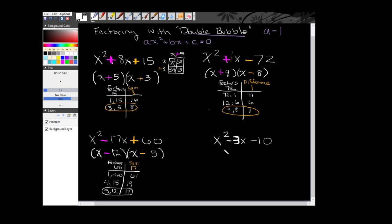And then here for my fourth example, I set up my double bubble. To make an x squared, I know that I need an x and an x. My first sign is a negative, so that falls down into my first set of parentheses.